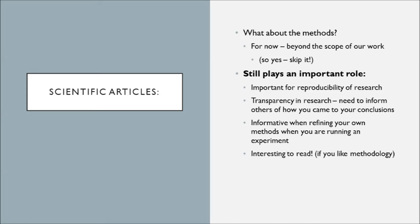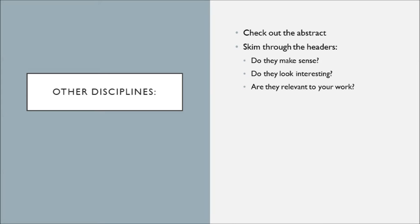A lot of what we've discussed holds true for other disciplines as well. Other disciplines might not have such a formulaic approach to their articles, but still check out the headings of each section. Do they make sense? Do they seem interesting and relevant? Is the introduction of a subheading relevant? Are they pulling things together appropriately? It's ultimately up to you to determine if your resource is appropriate for your work, but hopefully these hints help.